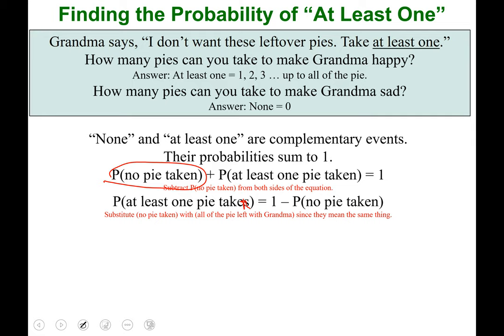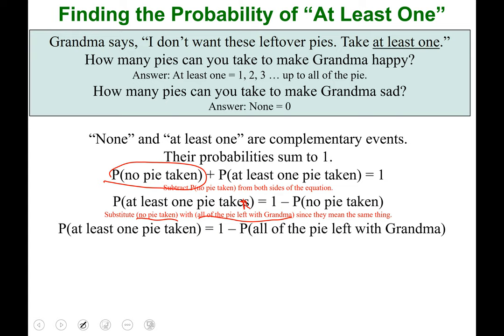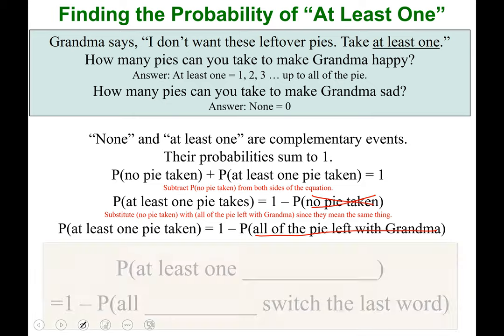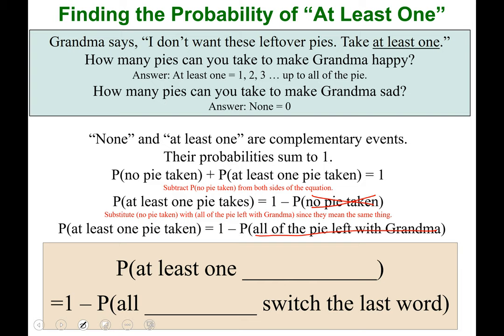Now we use the substitution rule. 'No pie taken' and 'all of the pies left with grandma' are the same thing. If you do not take any pie, you leave all the pies with grandma. In mathematics, when two things are equal we can substitute one for the other. That gives us: probability of at least one pie taken equals one minus the probability of all of the pie left with grandma.